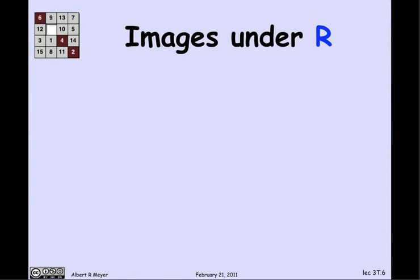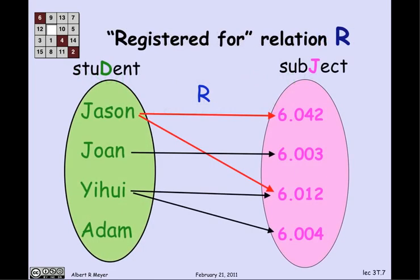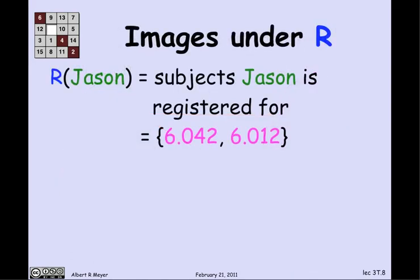A basic concept with relations is the image of a set of domain elements under the relation. R is not a function, so there may be more than one subject — as you'd expect for a student registered for multiple courses at MIT. Looking at the diagram, Jason is registered for 6042 and 6012, indicated by two highlighted red arrows. So R(Jason) is the set {6042, 6012}.